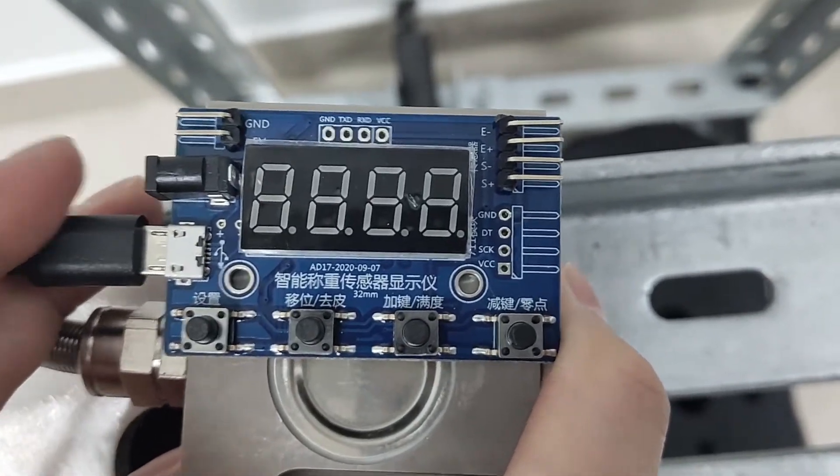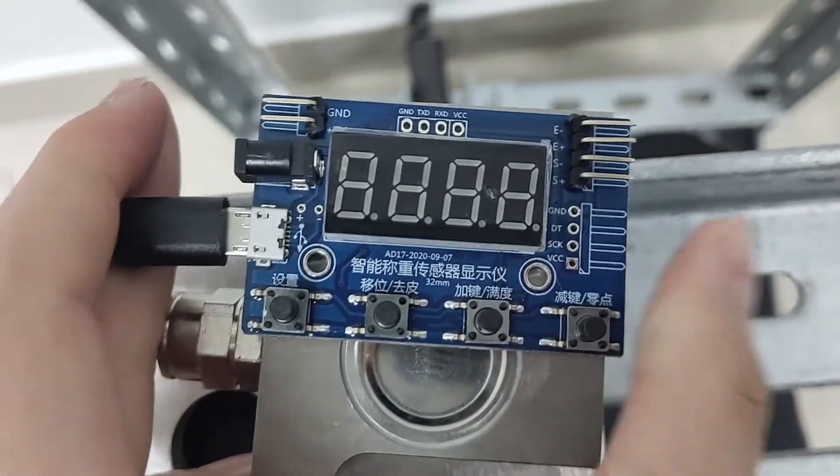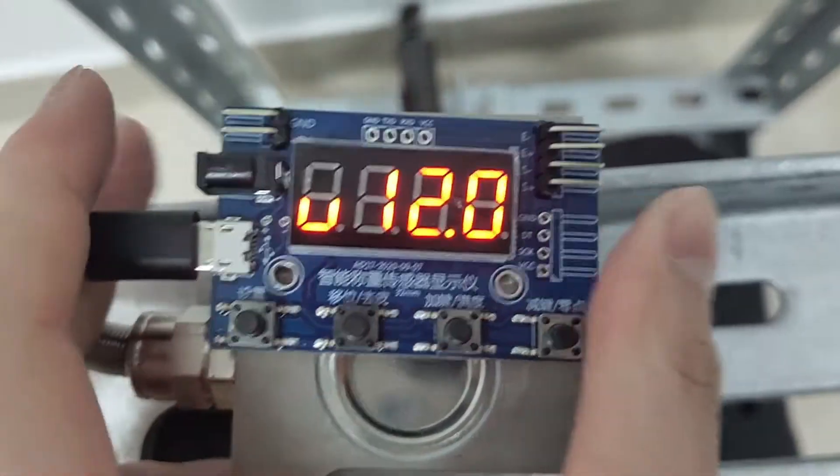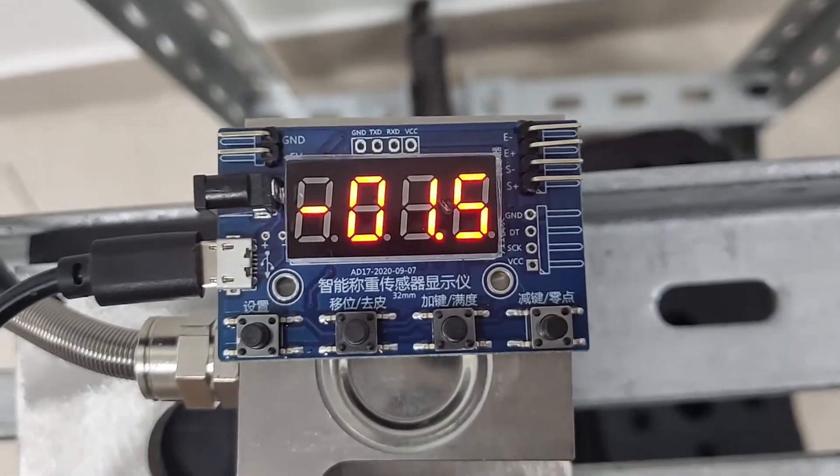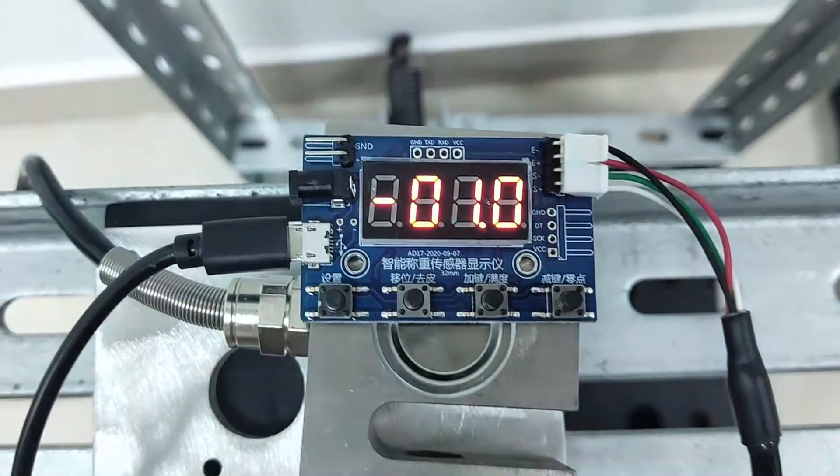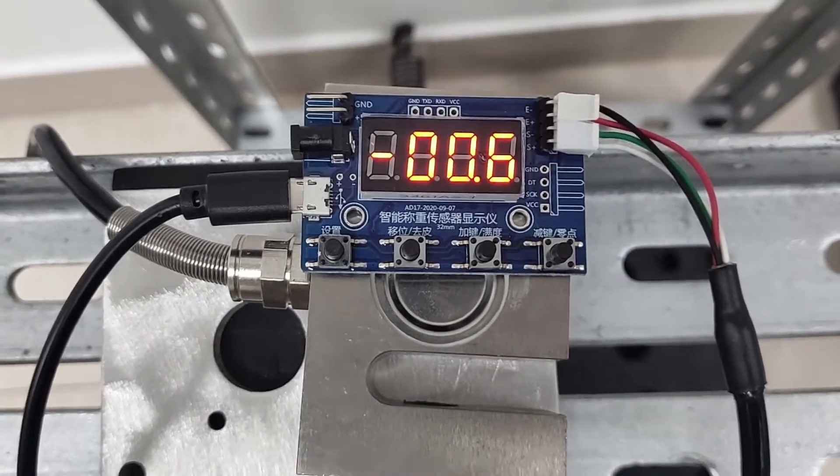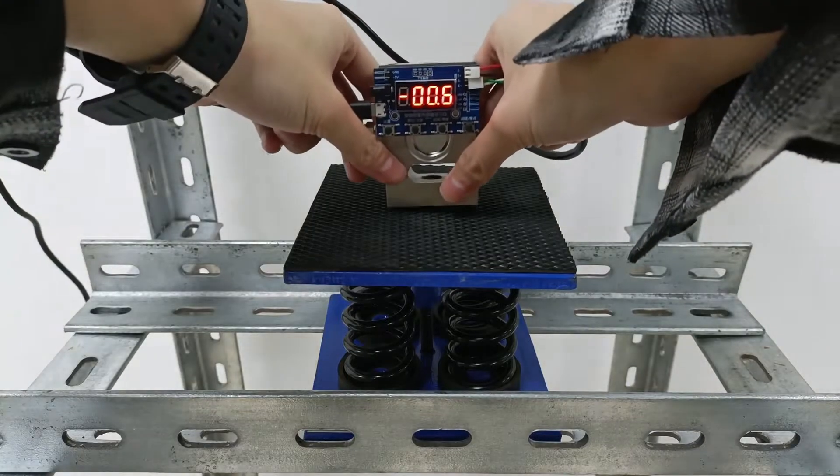After we connect the sensor and the display module, the LED screen of the display module can display the value of the pulling or pushing force received by the sensor. The unit is kilograms. Here we have performed numerical corrections on them in advance.